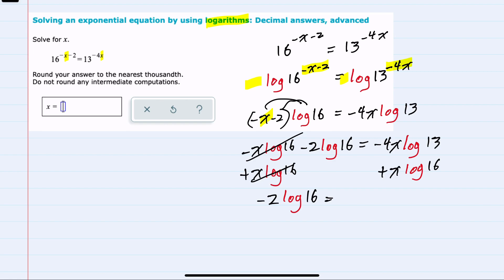but I can factor out the common x. Factoring out the x, I would have negative 4 log 13 in the first term, plus factoring out the x leaves me with a log 16 in the second term.